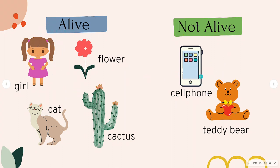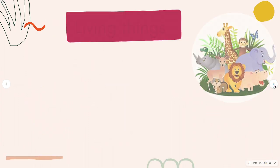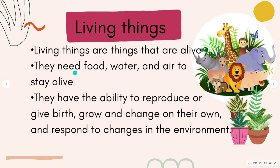The cell phone and teddy bear do not breathe, do not move, do not reproduce, and do not use their senses. Living things are the things that are alive — they need food, water, and air to stay alive. These are animals, plants, and even humans just like us. They are living things because they have the ability to reproduce or give birth, grow, and change on their own, and respond to changes in the environment.